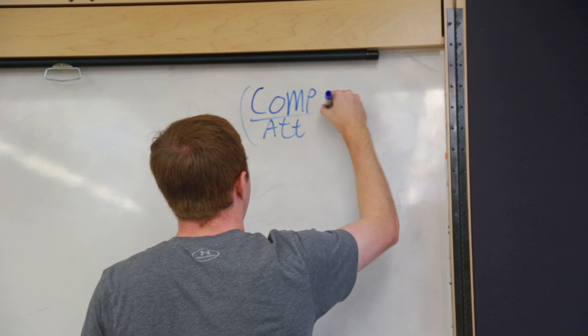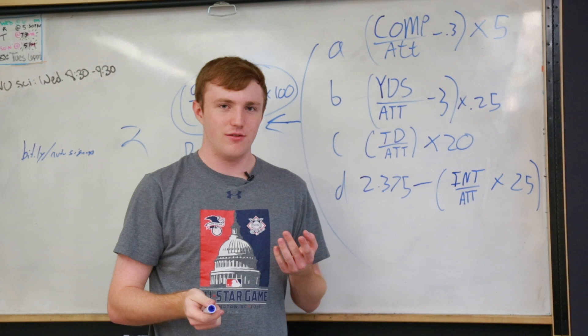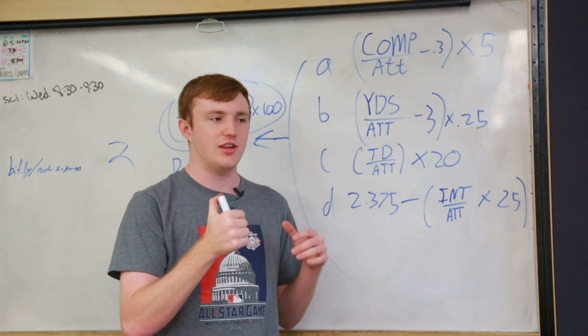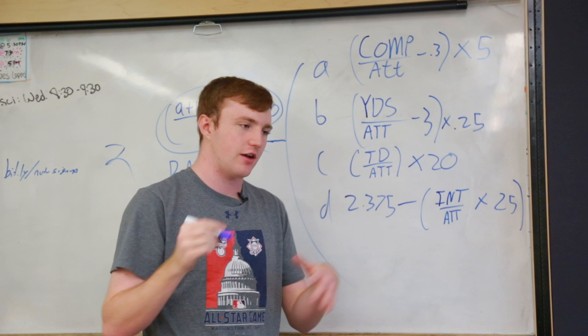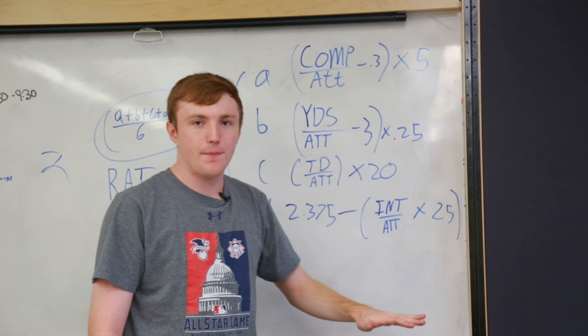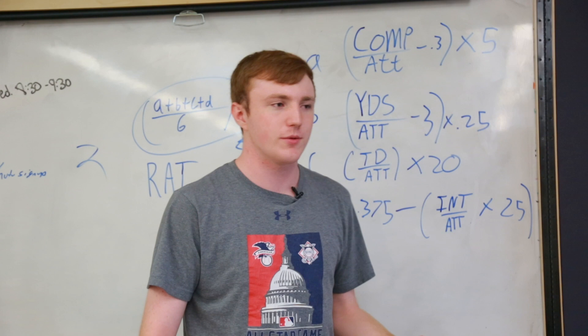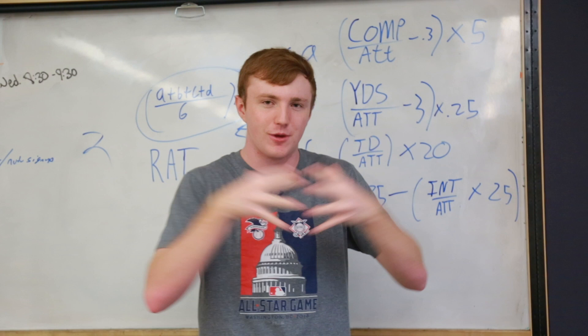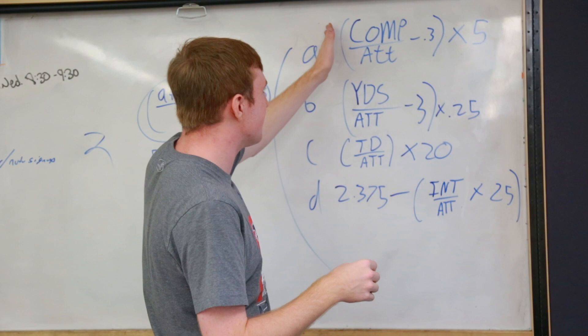We have four components of a good quarterback: completion percentage, yards per attempt — how often they complete passes and how far those passes go — the rate at which they score touchdowns, and the rate at which they throw interceptions. Obviously if you wanted to look at the performance of a quarterback you could look at those four stats, but the theory behind this is you want to combine them all into one stat so you can directly compare different quarterbacks.